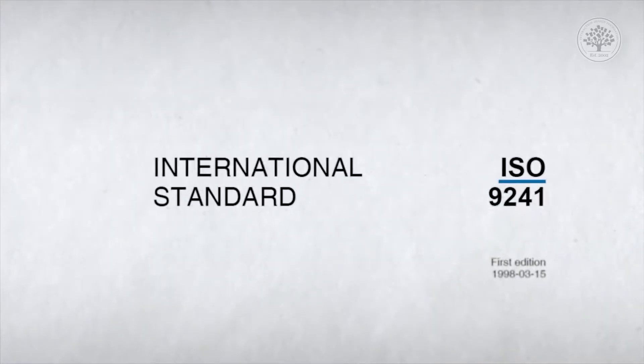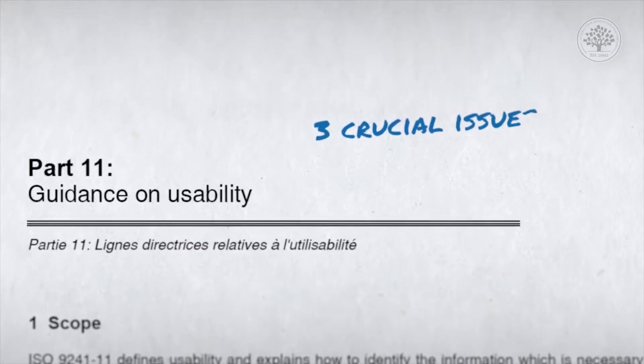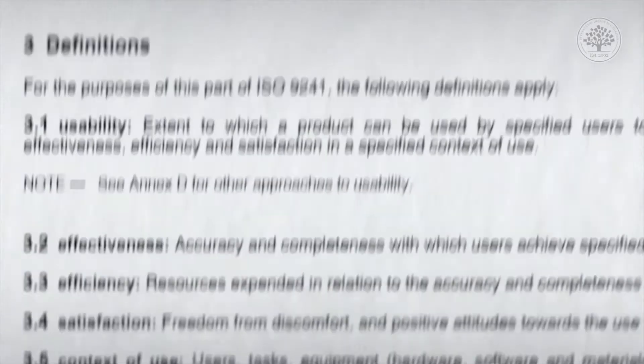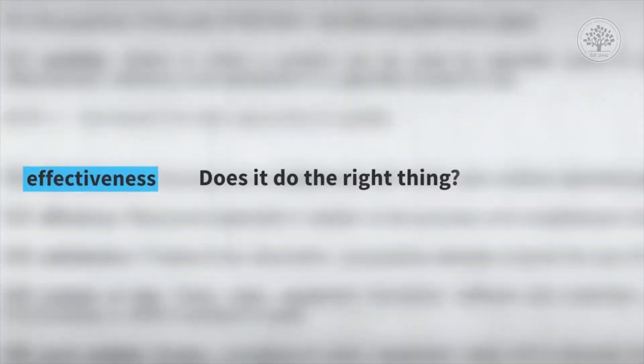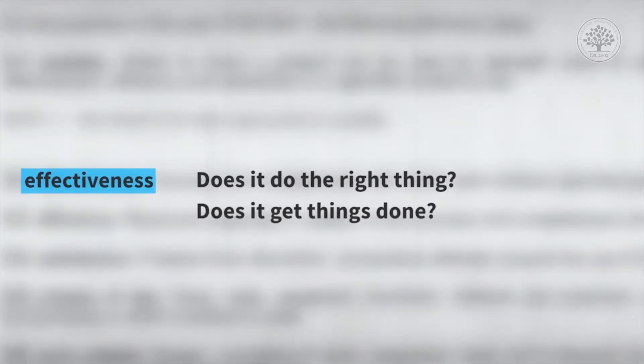One of the early standards that mentioned usability was ISO 9241, and it talked about three crucial issues for user interfaces. One of them was effectiveness. Does it do the right thing? Does it get things done that are important?